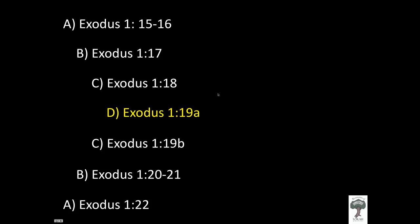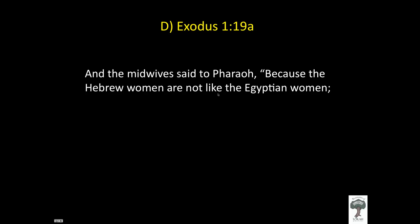Then we reach the central axis: Exodus 1:19a, where the midwives said to Pharaoh, 'Because the Hebrew women are not like the Egyptian women.' There is a teaching lurking right there. Now that we've seen this passage is uniquely marked off by the Holy Spirit — who had Moses write this story in this literary pattern — we want to enjoy the beauty of Adonai's word. He wrote it in a literary pattern so that we could see it.